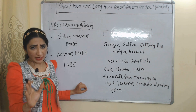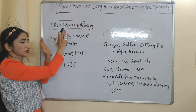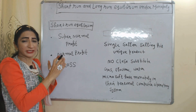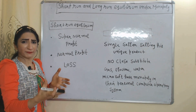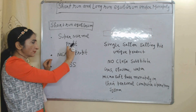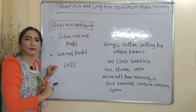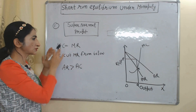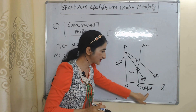First of all, we are going to talk about short-term equilibrium under monopoly market. At the short-run period, a monopoly market mainly faces three kinds of situations: super normal profit, normal profit, and loss. We will discuss each one by one. First, we are going to talk about super normal profit.